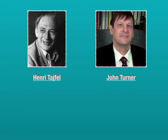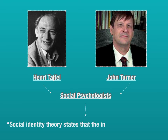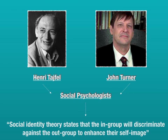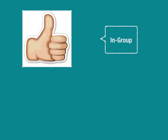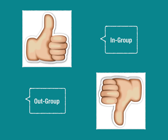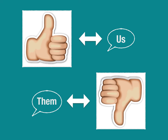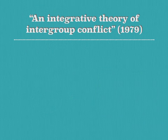Henri Tajfel and John Turner are the brains behind social identity theory. As social psychologists, they were interested in understanding how people interact and exist. In their conclusion, social identity theory states that the in-group will discriminate against the out-group to enhance their self-image. The in-group is the group an individual wants to be a part of — the favored group. The out-group is the group an individual does not like and doesn't want to be involved with. In other words, the in-group is the 'us' and the out-group is the 'them,' with a clear distinction based on favoritism and derogation.